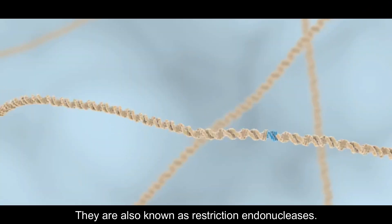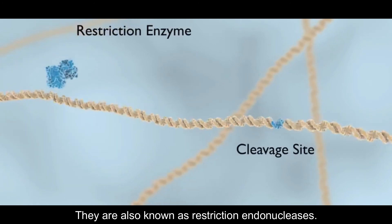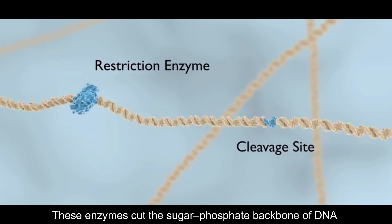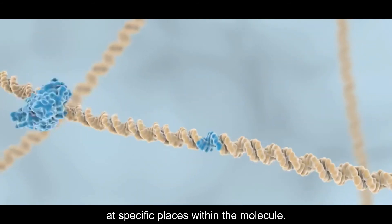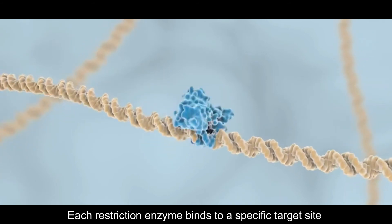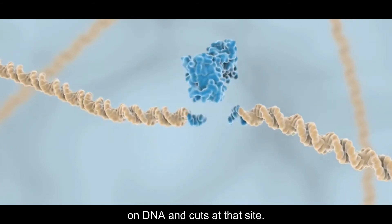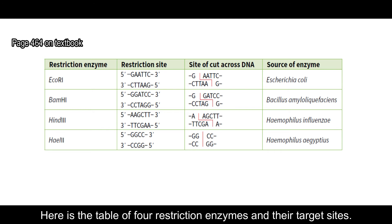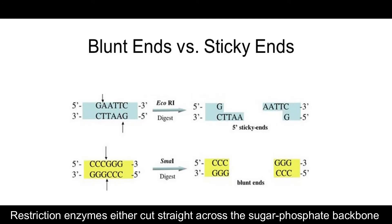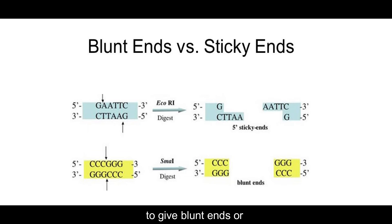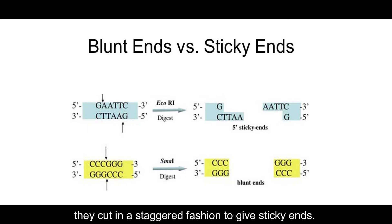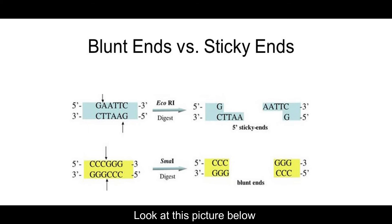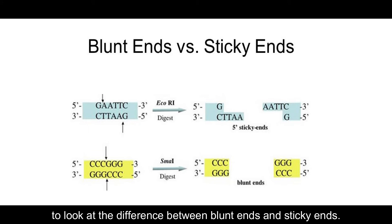The first tool is restriction enzymes, also known as restriction endonucleases. These enzymes cut the sugar-phosphate backbone of DNA at specific places within the molecule. Each restriction enzyme binds to a specific target site on DNA and cuts at that site. Here is a table of four restriction enzymes and their target sites. Restriction enzymes either cut straight across the sugar-phosphate backbone to give blunt ends, or they cut in a staggered fashion to give sticky ends.